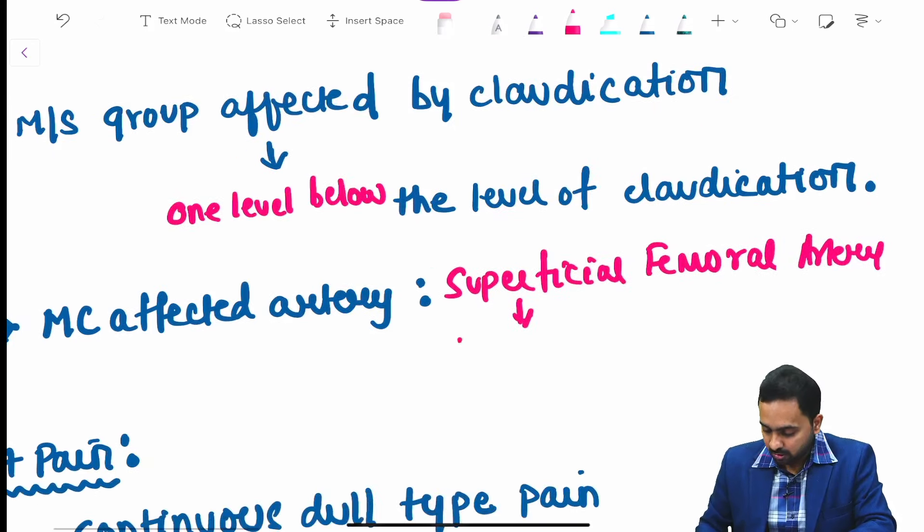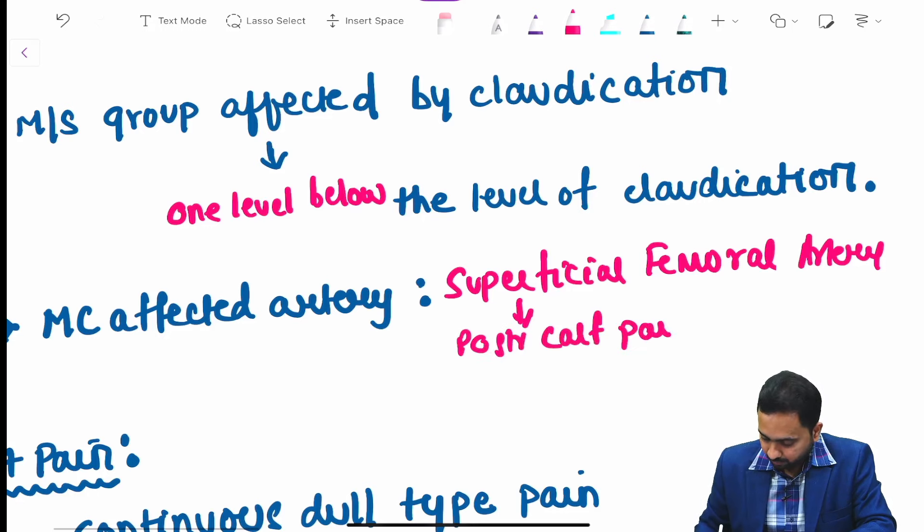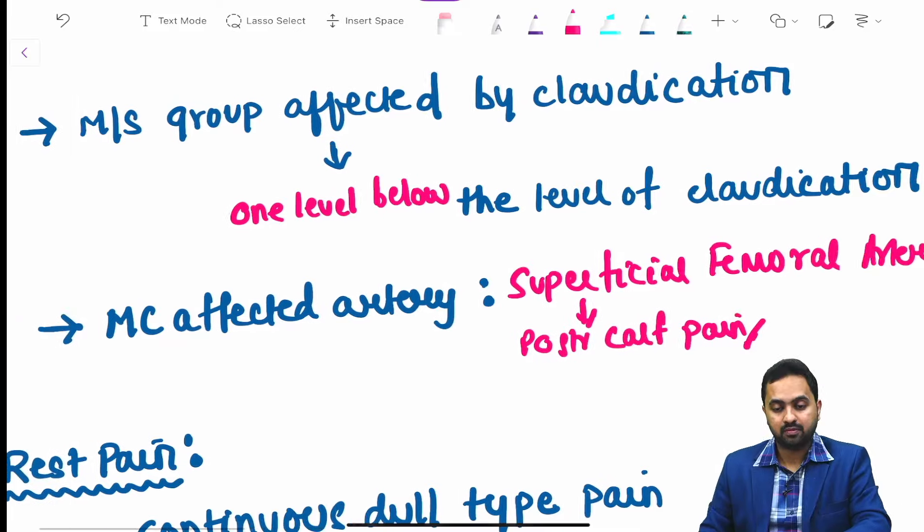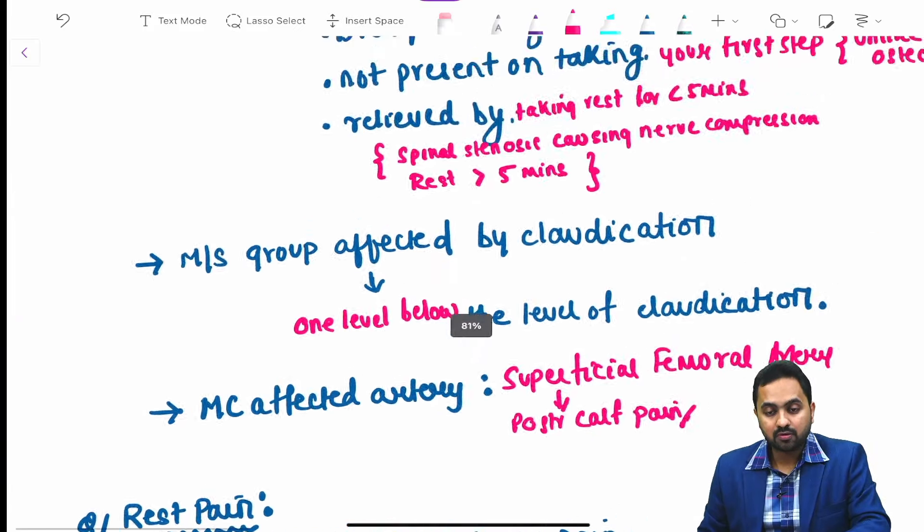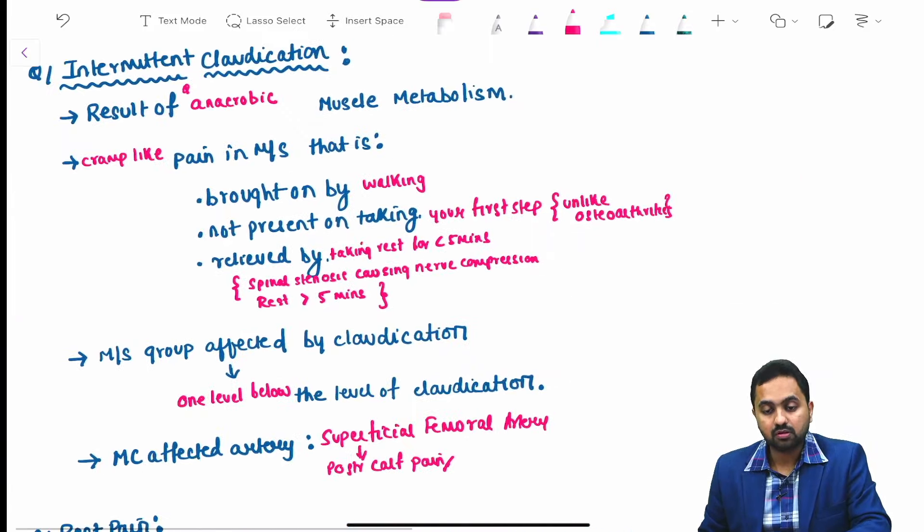The most common affected artery is the superficial femoral artery, which presents with posterior calf pain. So this is about intermittent claudication.